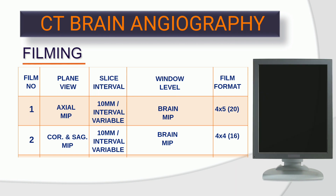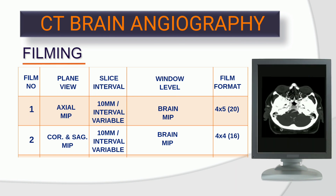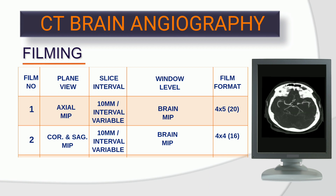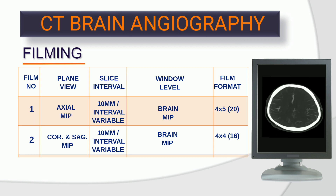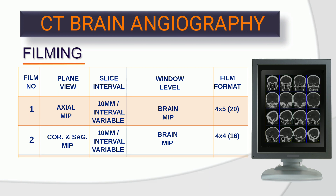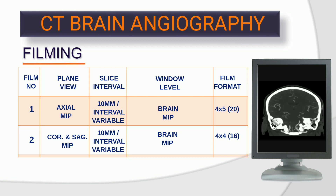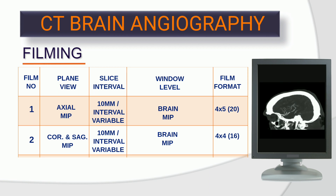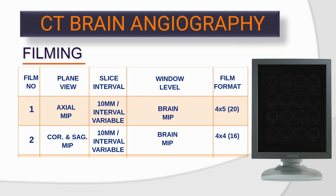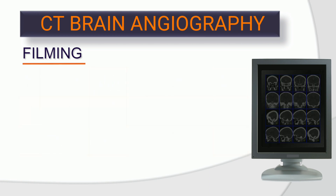Filming. Film 1 — plan view: axial MIP; slice thickness: 10 mm; interval: variable; window level: brain MIP; film format: 4x5, 20 images. Film 2 — plan view: coronal and sagittal MIP; slice thickness: 10 mm; interval: variable; window level: brain MIP; film format: 4x4, 16 images — 8 images of each plane.